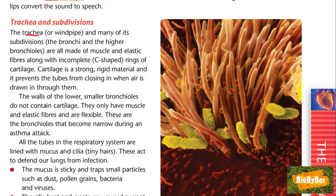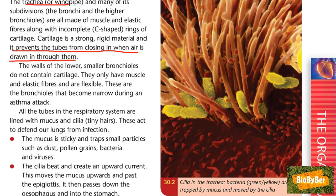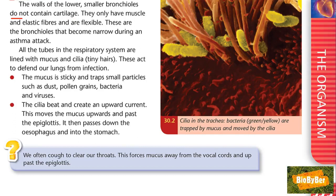The trachea, or windpipe, and its subdivisions — the bronchi and bronchioles — are all made of muscle, elastic fibers, and c-shaped rings of cartilage. Cartilage is a strong rigid material; its important function is to prevent the tubes from closing in when air is drawn through them, helping to hold the windpipe open. The walls of the lower, smaller bronchioles do not contain cartilage — they only have muscle and elastic fibers and are flexible. These are the bronchioles that become narrow during an asthma attack, giving the feeling of breathlessness.